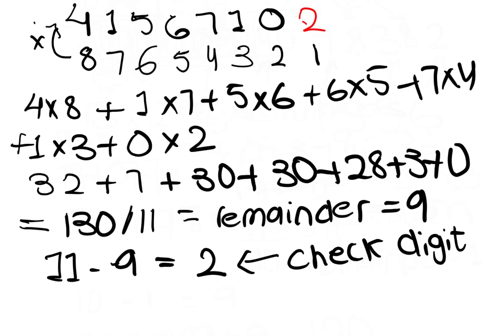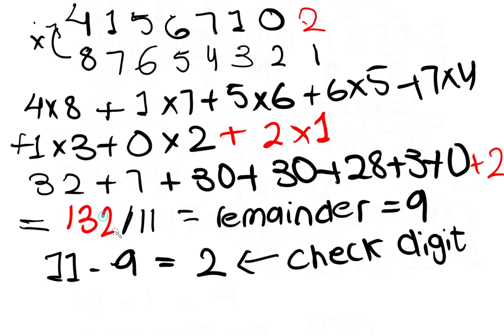Now let's do the recalculation from the 8-digit number which now includes the check digit. We replace the variable x with 2 and include 2×1 in our sum as well. Adding 2 gives us 132 instead of 130. Dividing 132 by 11, our remainder in the recalculation should be 0. The remainder 0 confirms that the check digit 2 is correct.